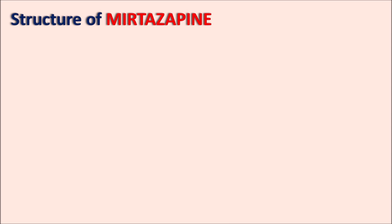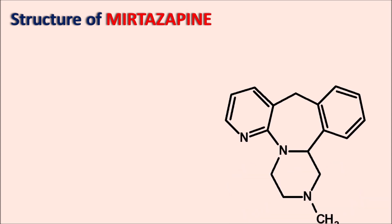What is the structure of Mirtazapine? This structure contains four rings fused with each other, so this is a tetracyclic antidepressant. Within the old generation we can observe tricyclic antidepressants like amitriptyline, nortriptyline, imipramine, and desipramine. But Mirtazapine is a tetracyclic antidepressant and belongs to a new generation, so it is also called an atypical antidepressant.